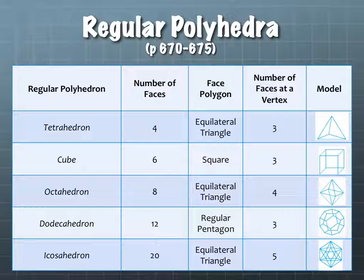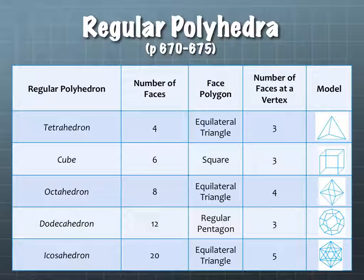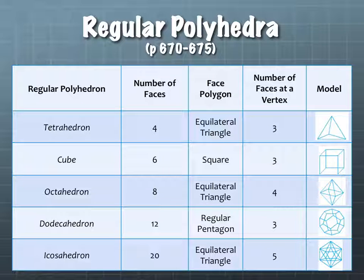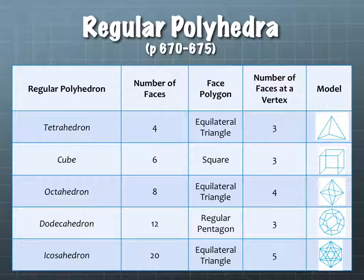Dodecahedron — 'dodeca' means 12, so a dodecahedron has 12 faces. The 12 faces are all regular pentagons. At each vertex, you actually have three pentagons meeting. Hopefully you can see that with the picture as it's drawn in there. They're a little tricky to look at, but this piece right here is not too bad.